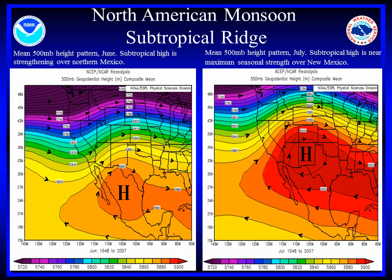In addition to the low level moisture circulations, an upper level subtropical ridge develops over the southern high plains and northern Mexico. In June, this ridge is too far south over Mexico and acts to block deep moisture from moving into the desert southwest. However, by late June to early July, this ridge shifts north into the southern plains or southern Rockies. As this shift takes place, mid and upper level moisture streams into the desert southwest and low level moisture surges from Mexico meet less resistance.